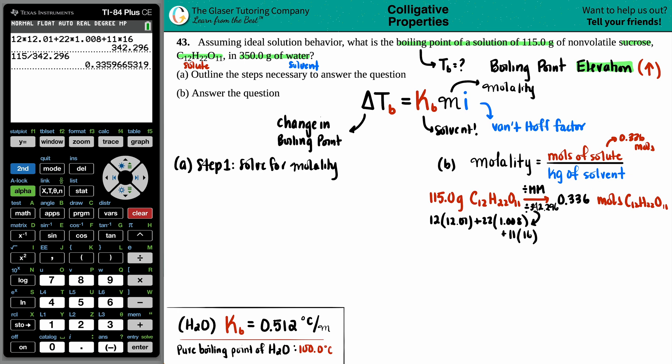The next thing we need is the kilograms of the solvent. They gave us 350.0 grams of H2O, water. I need to go from grams to kilograms of H2O. All the way back to basics, grams to kilograms, just divide by a thousand. This would be 0.350 kilograms.